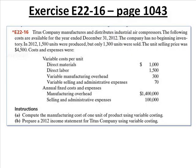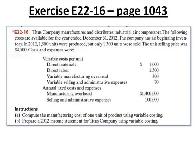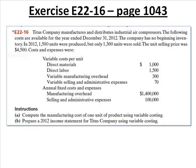Read with me. T. Equipment Company manufactures and distributes industrial air compressors, with the emphasis being on industrial. The following costs are available for the year ended December 31st. The company has no beginning inventory. They produced 1,500 units in the current year and sold 1,300. Ending inventory was 200 units. The unit sales price was $4,500 — I was thinking I might have one of these in my garage, but it's an industrial air compressor, and I'm not spending $4,500 for one.